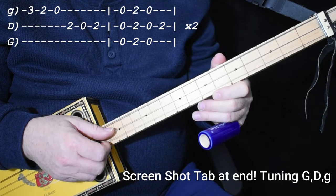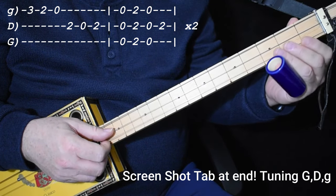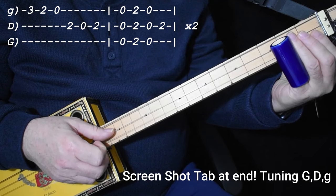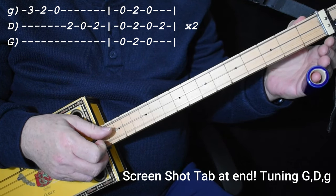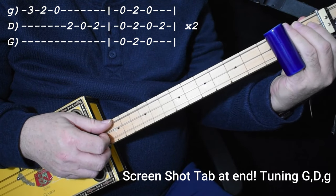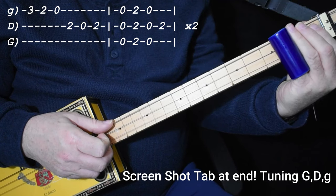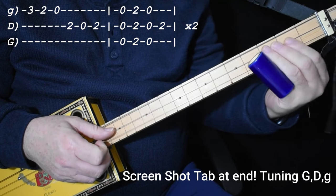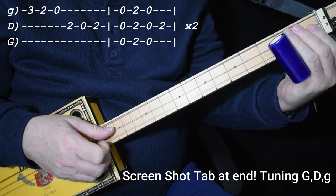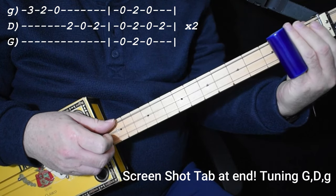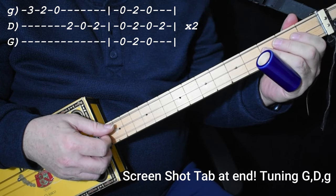We're just going to start with a 3, sort of slide into it, on the first string, then 2 on the first string, then open on the first string, and then 2, 0, 2 on the middle string. There's a swing feel to it. I'm playing it a little bit slower so that you can follow along.